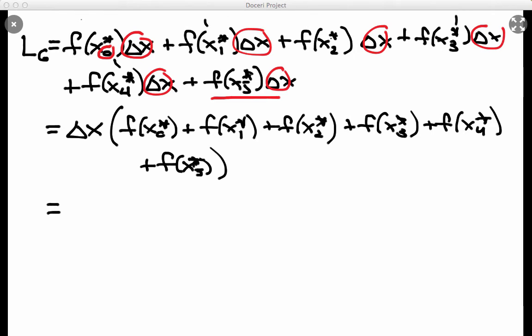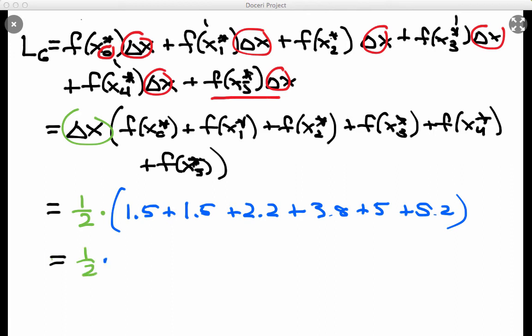Now first of all delta x, we do know is 1 half. This is going to be a half times. Now let's write down all these f of x star values. The first one was one and a half, the second one was also one and a half. These are estimates, but we do the best we can with what we've got, 2.2, 3.8, 5, and 5.2. Now let's just do the arithmetic and what should be done here. Now the one half is still being multiplied, don't forget that. And then on the inside, all these numbers add up to 19.2 if we do a quick calculation. And so a half times 19.2 is 9.6.